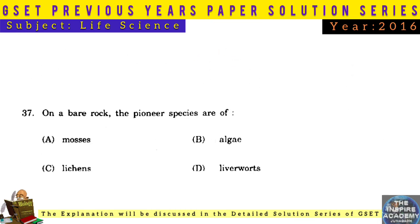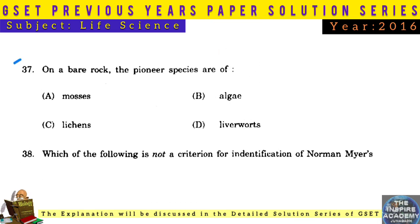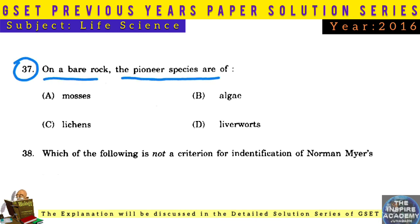Question No. 37: On a bare rock, the pioneer species are lichens. Lichens represent a mutualistic relationship between algae and fungi — the mycobiont is the fungus and the phycobiont is the alga.